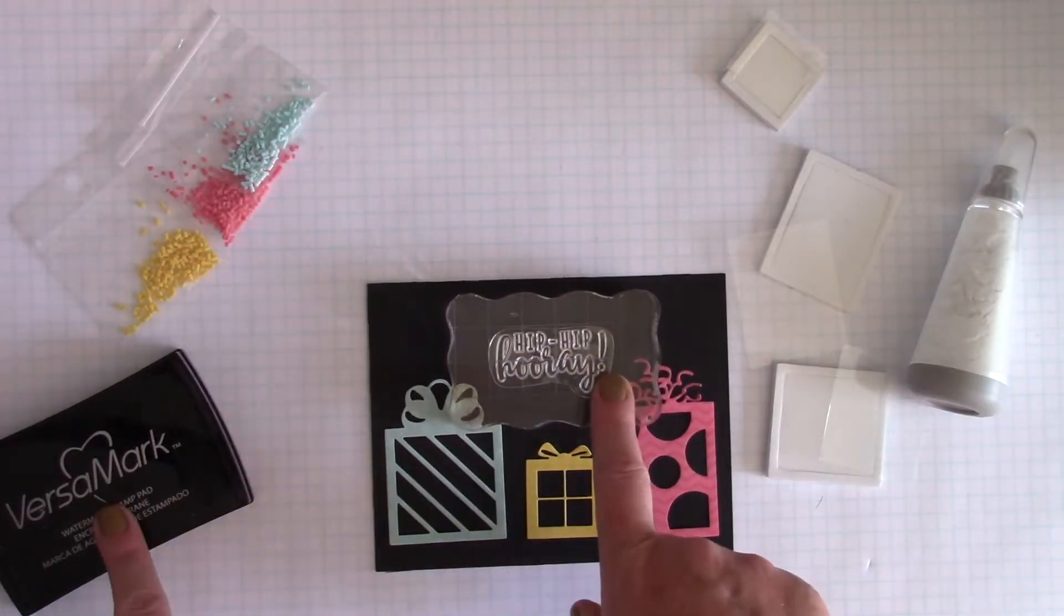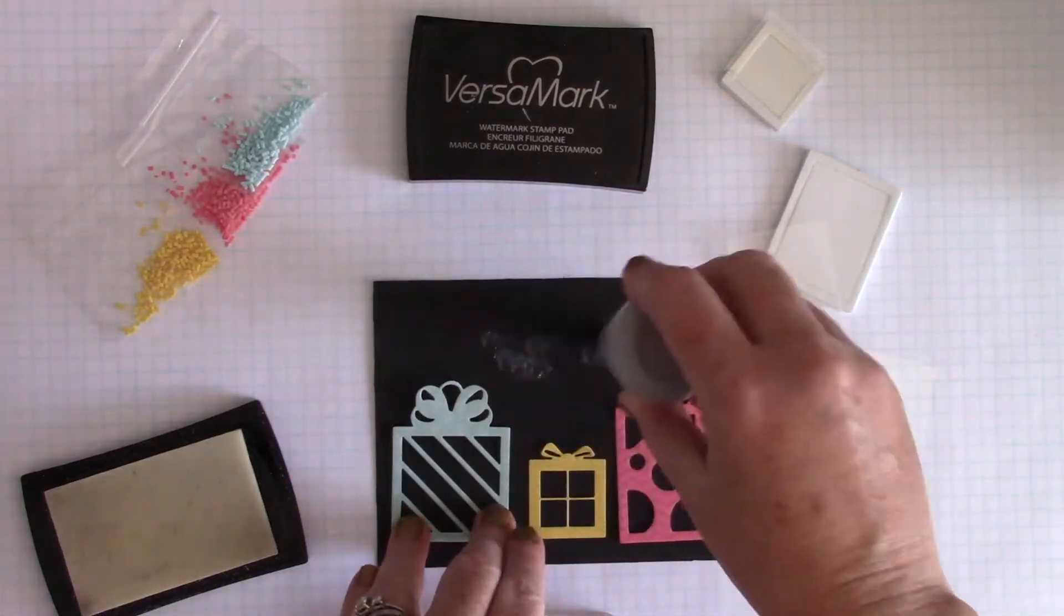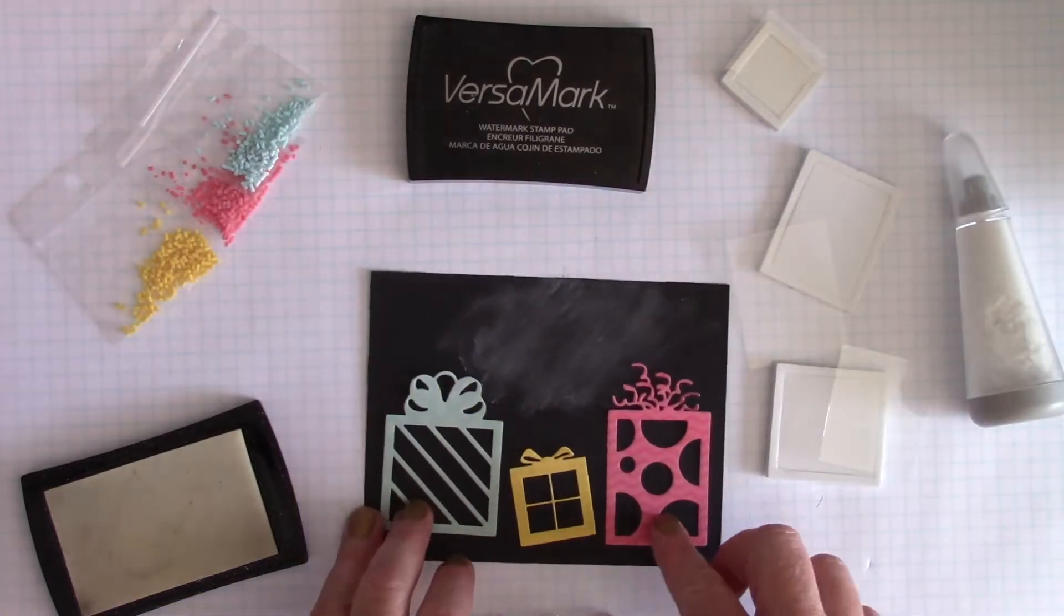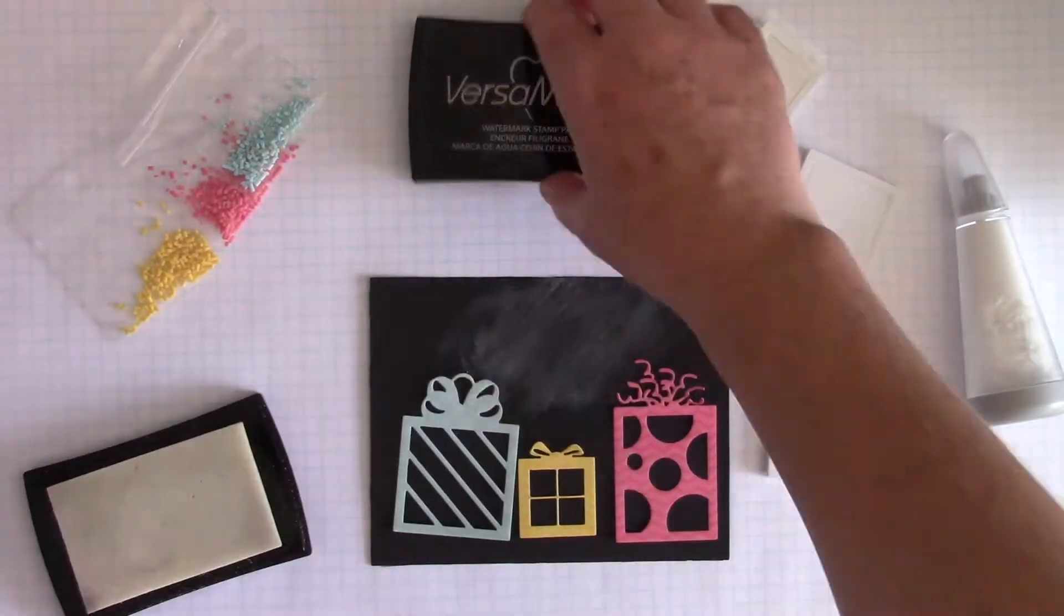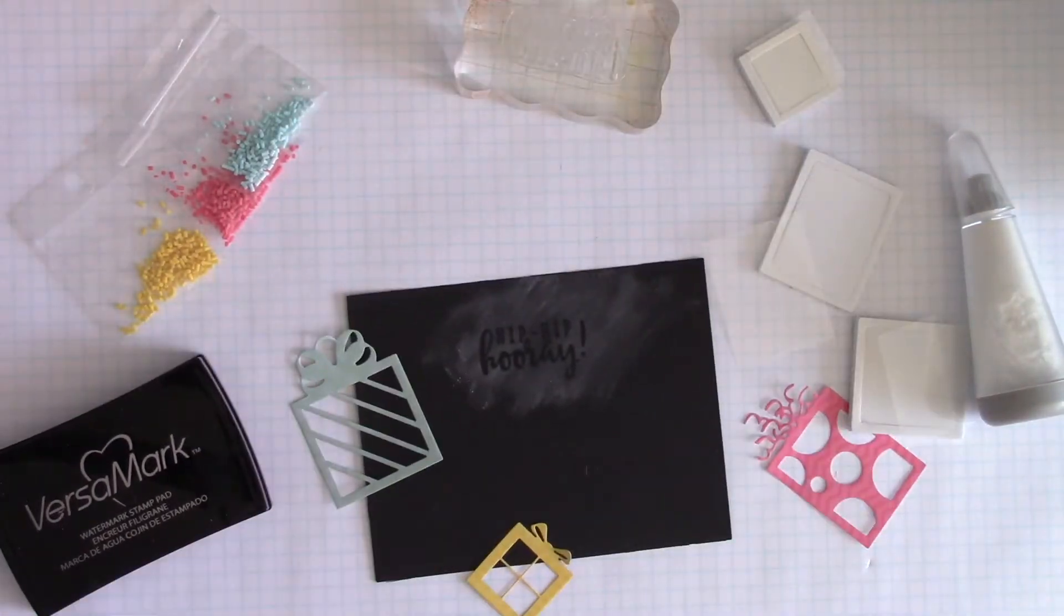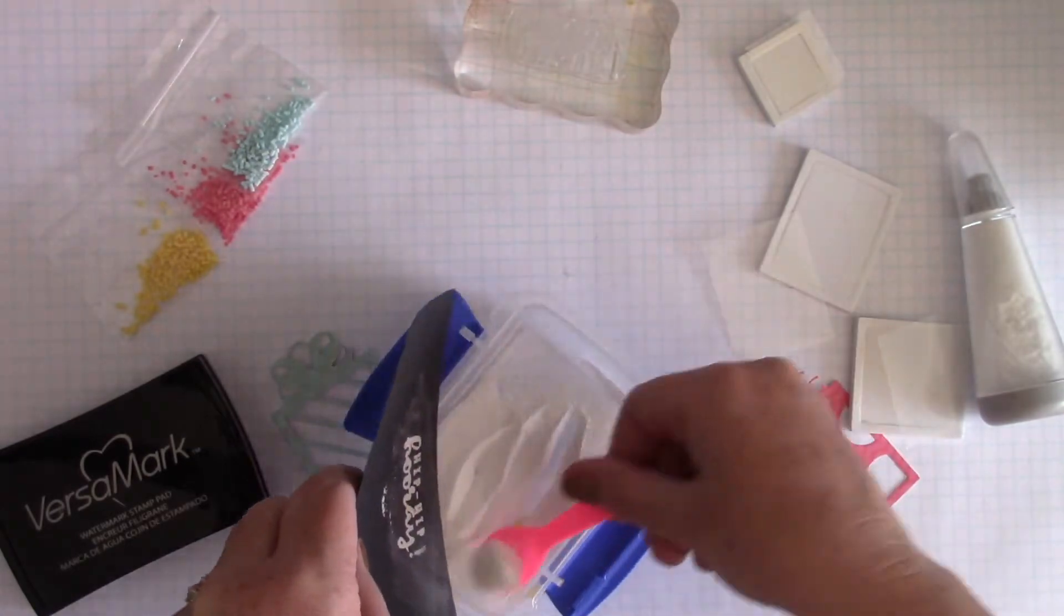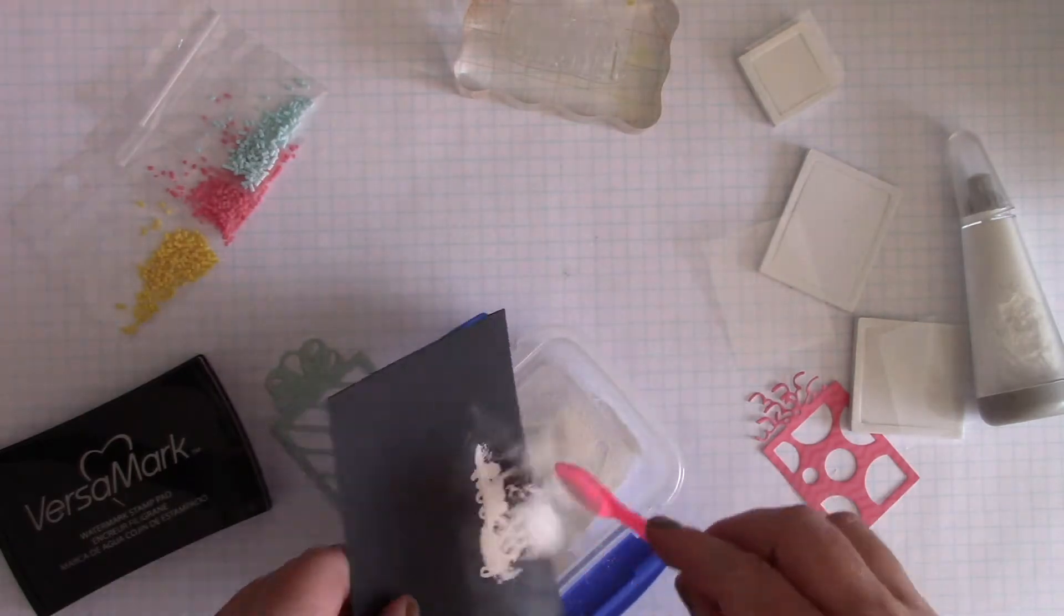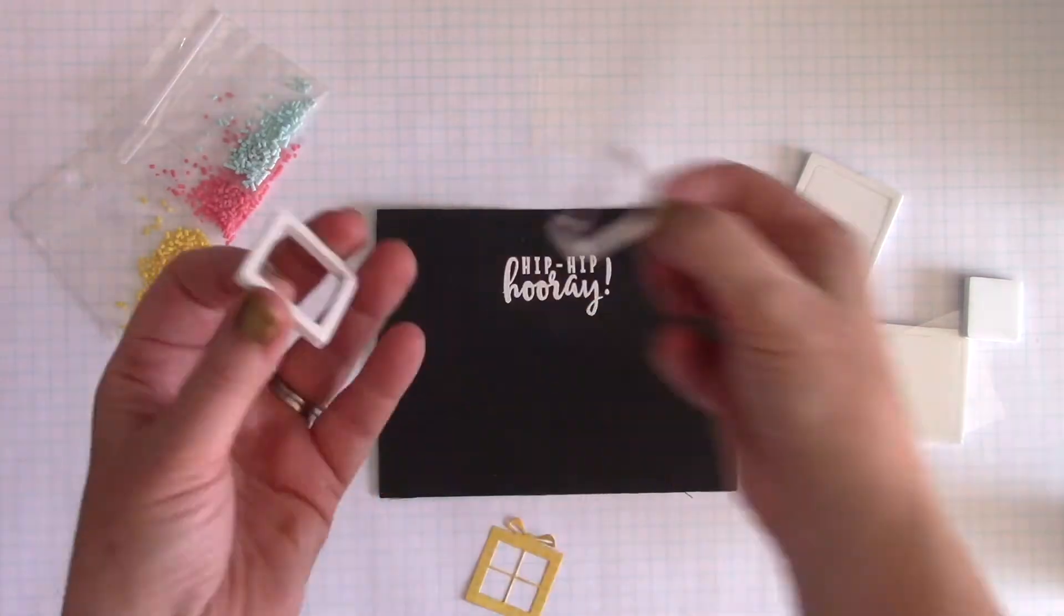So I have three of my presents all set out and I have a sentiment from the stamp set that I am going to ink up with VersaMark ink. But first I'm going to put some anti-static powder tool on my black cardstock. I really like the way the colors from Pretty Presents pop on the black background. So I'm going to ink up my stamp with VersaMark ink and stamp that. Then I'm going to move those presents away and I'm going to cover it with white embossing powder, make sure that the entire sentiment is really completely covered and tap off any extra grains that are sitting around there. And then I'm just going to heat set that.